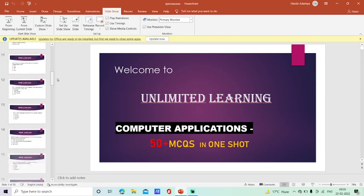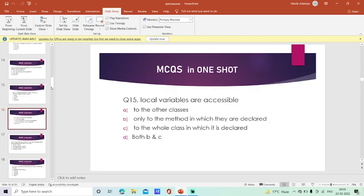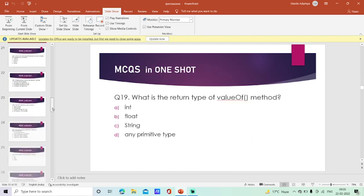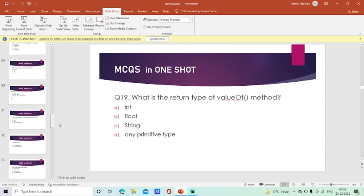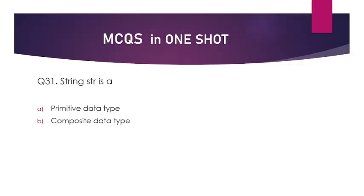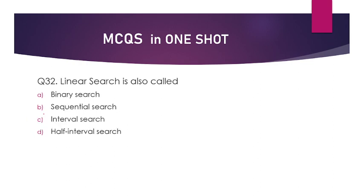We were supposed to start with question number 31. So this is question number 31. String is a primitive data type or composite data type? The answer will be option number B — it is a composite data type.